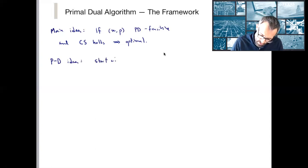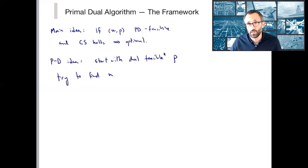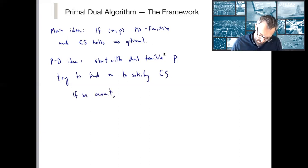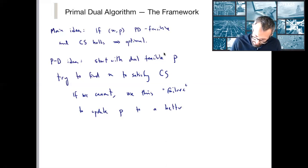The primal-dual algorithm idea is: we start with a dual feasible p, then try to find an x that shows p is optimal — namely, try to find an x which satisfies complementary slackness. If we cannot, we use this failure to update p to a better (larger, since we're maximizing) dual solution while always maintaining dual feasibility.